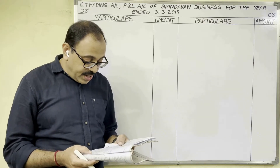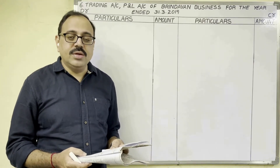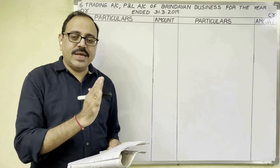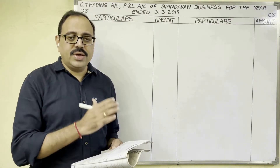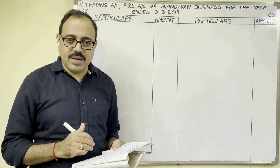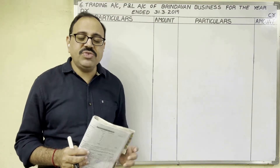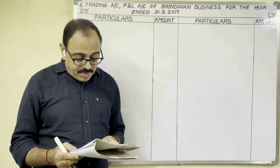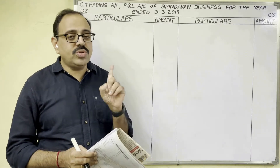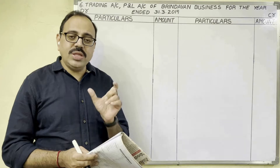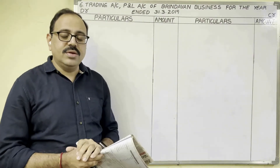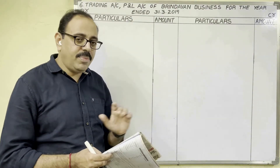The problem is: prepare final accounts from the trial balance of Brindavan Business for the year ended 31st March 2019. The trial balance rule: debit column has assets, expenses, losses, drawings; credit column has liabilities, incomes, gains, provisions, funds, reserves, and capital. The firm is Brindavan Business. Final accounts means trading account, profit and loss account, and balance sheet.